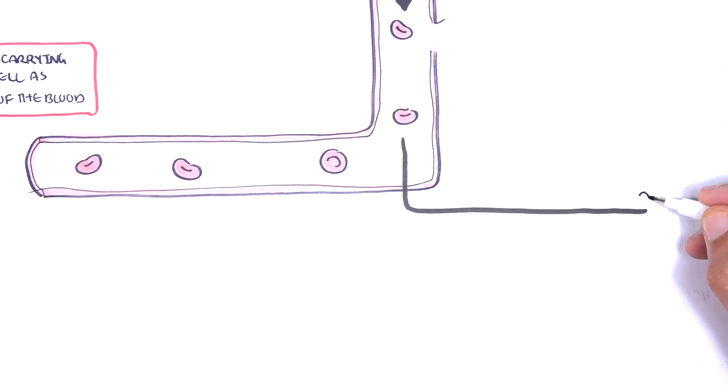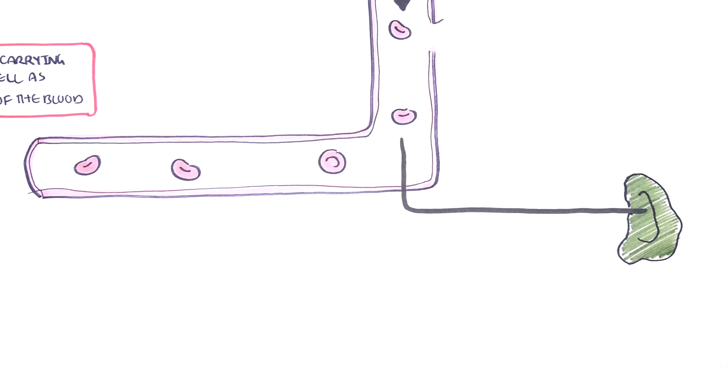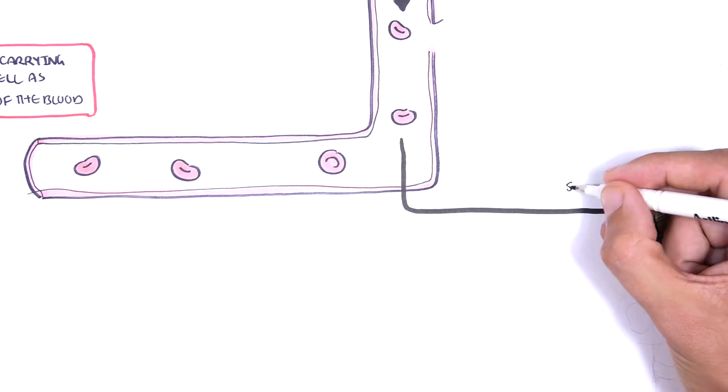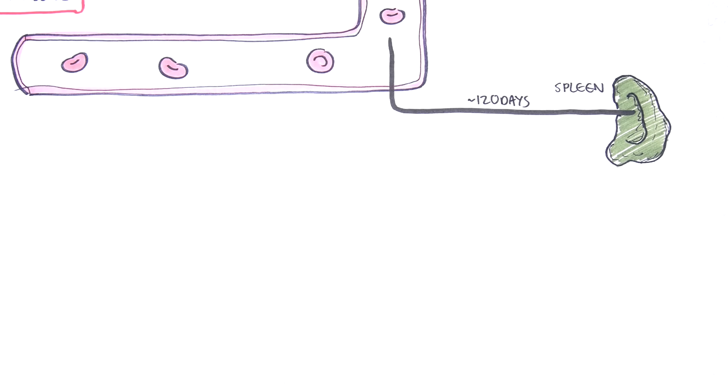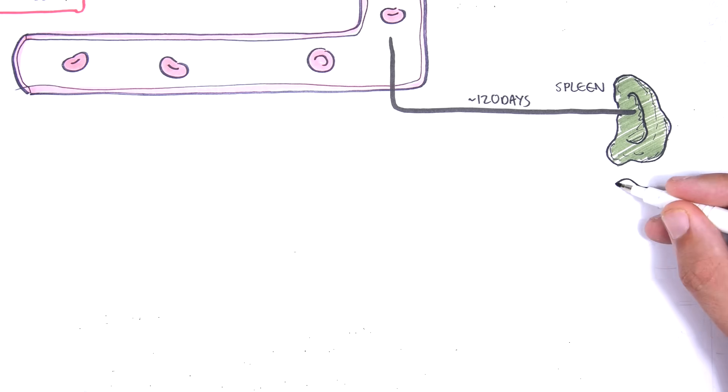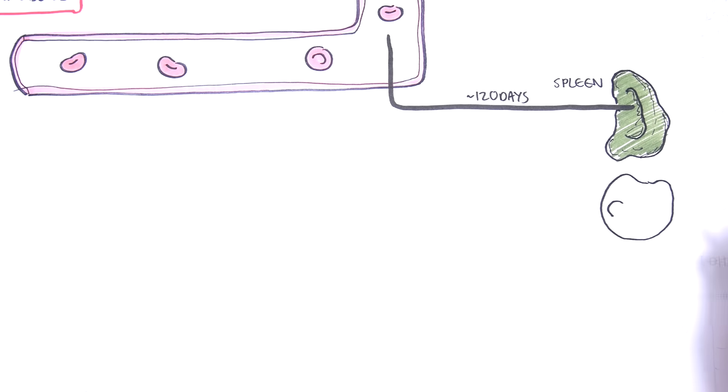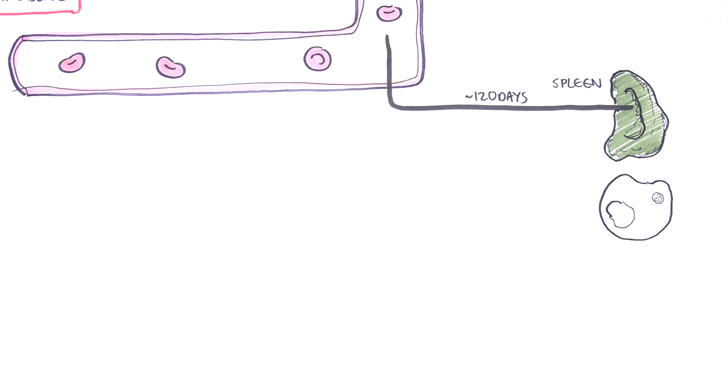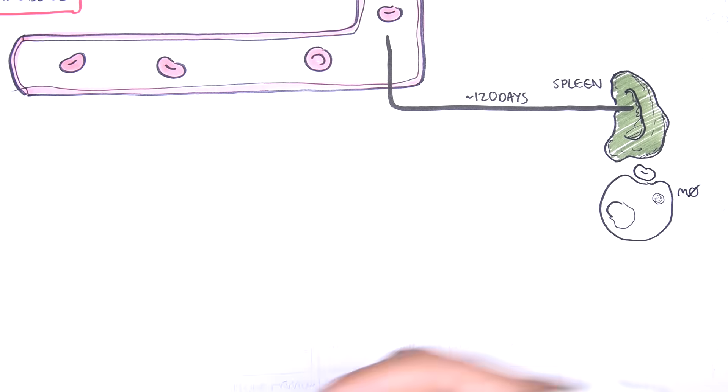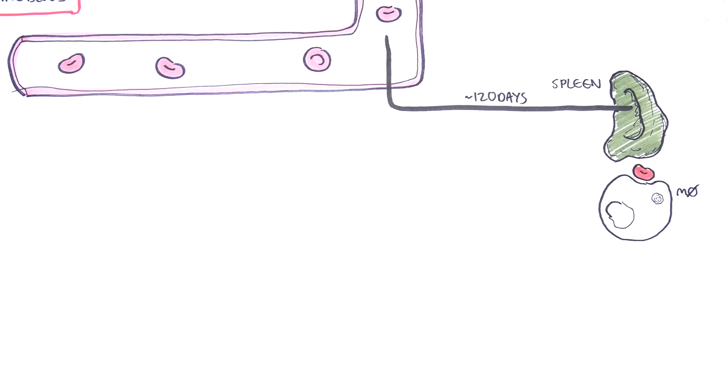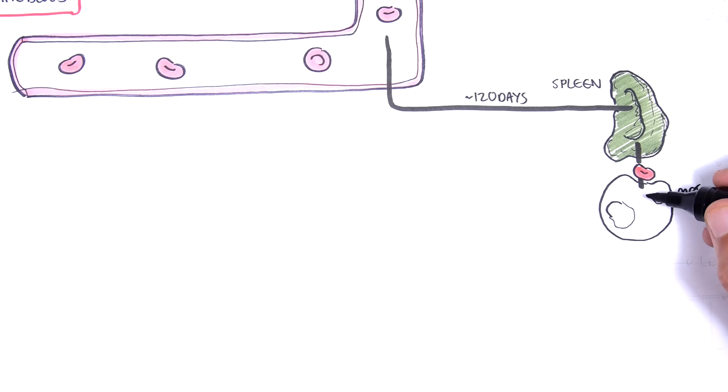The mature red blood cell circulates for around 120 days, after which time it is removed from the circulation by the reticuloendothelial system. The reticuloendothelial system includes the spleen and the liver, where macrophages and monocytes will eat up and clear up these old red blood cells, but also clear up the abnormal red blood cells.